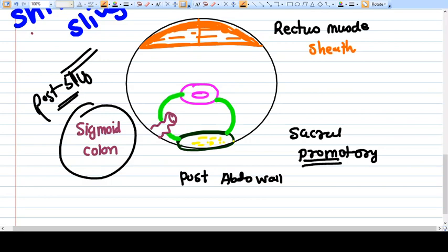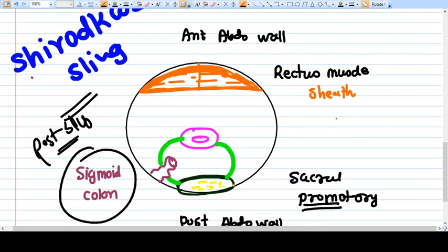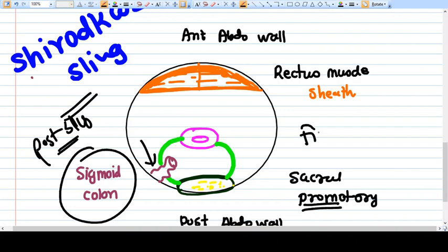So the problem is that we have a sigmoid colon in between on the left side. This surgery, Shirodkar sling surgery, will have some amount of complication due to interference with this sigmoid colon on the left side. This is a fixed sling, not dynamic sling like Purandare sling.